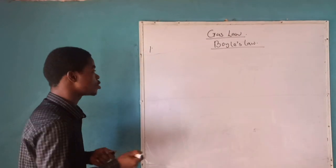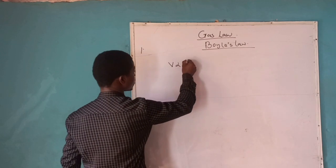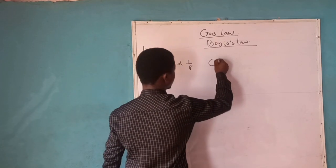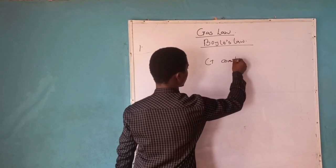So Boyle's law states that the volume of a given mass of gas is inversely proportional to the pressure of the gas provided that the temperature remains constant.